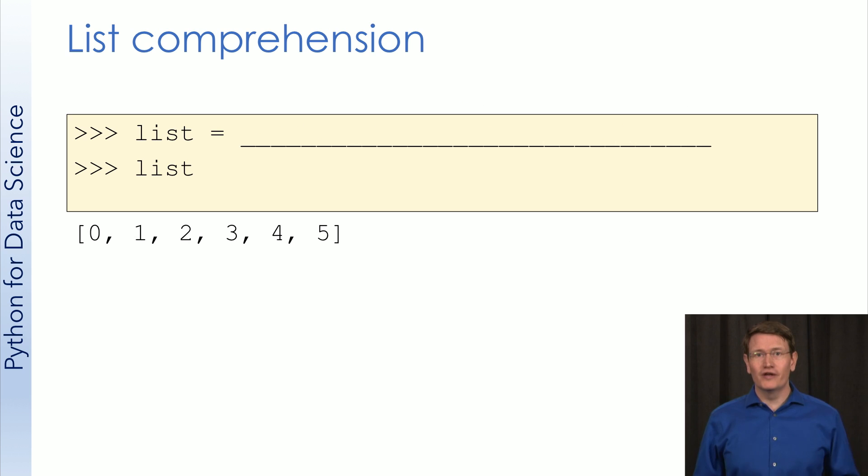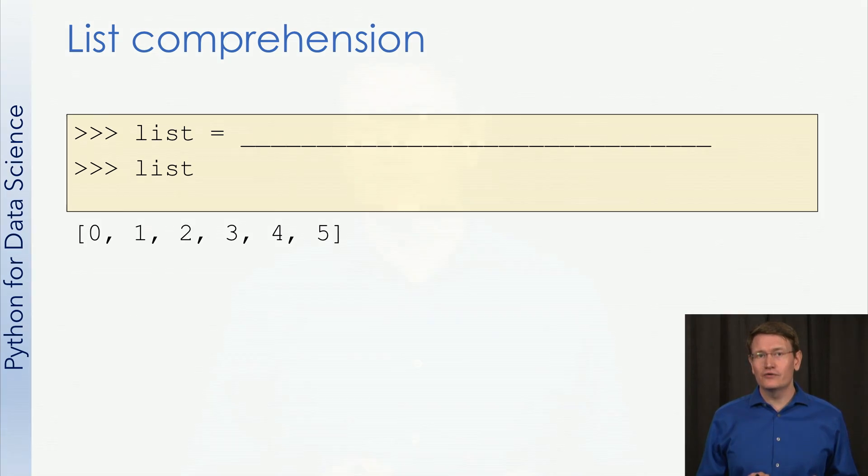OK, your turn now. Let's start by just making a list with the values 0 through 5. Stop the video, think about what belongs here, try to write it down or test it out, and then resume.